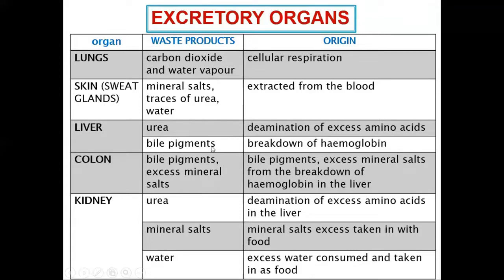The liver excretes urea and bile pigment. Urea is a result of deamination. When we talk about deamination, we're talking about the removal of the amino group from a protein. The amino group is removed, and that part which made it a protein is converted into another substance — urea. This means that we don't store excess proteins in our body.